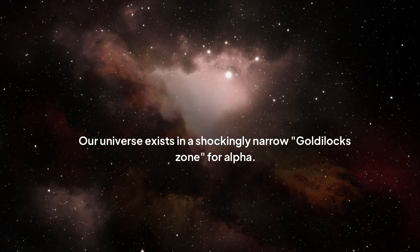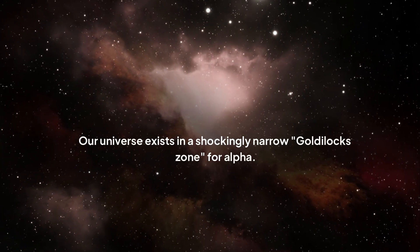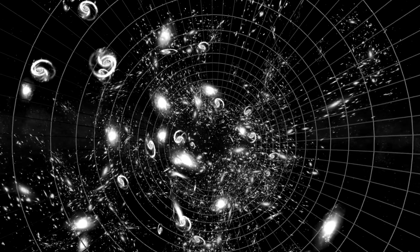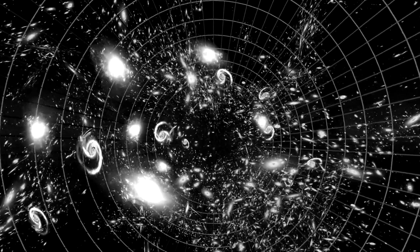Our universe exists in a shockingly narrow Goldilocks zone for alpha. If the number were just a little different, the cosmos as we know it, a place of stars, galaxies, and us, simply couldn't be. And that forces us to ask a very deep question: Are we just that lucky?